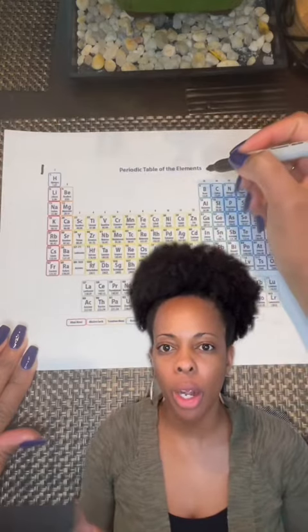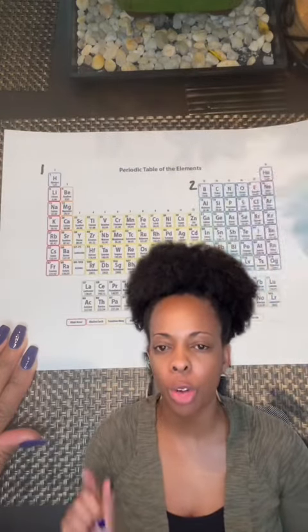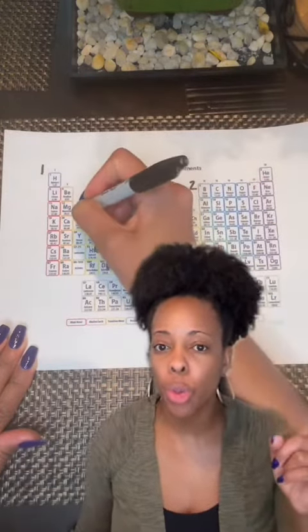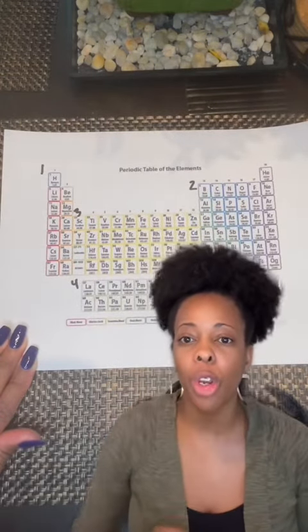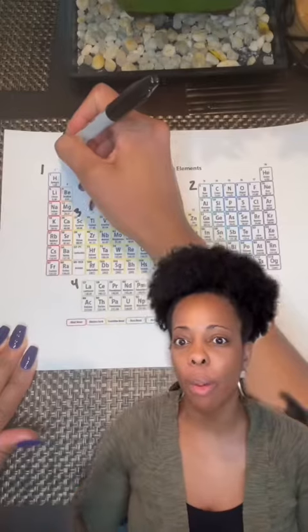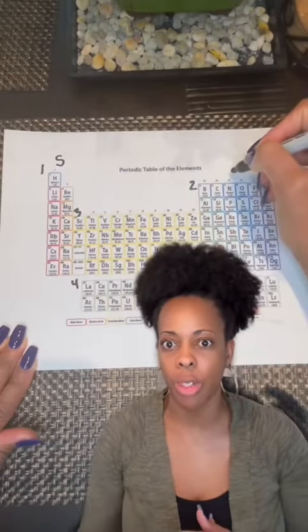Start by putting a number one where those first two columns are, or your first two groups, a number two where the other set of your main group elements are, a number three where your transition elements are, and then a number four for those inter-transition metals.